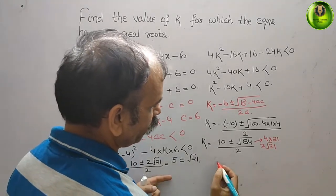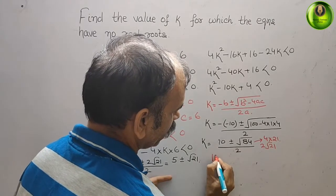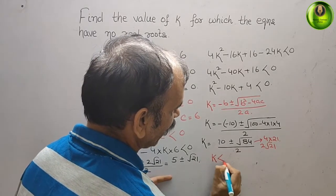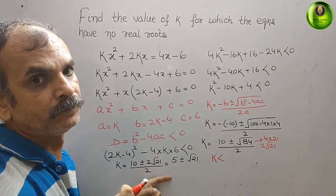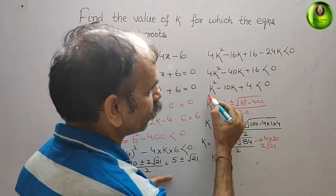So how we will find out the value of that? k should be less than, in which time will it be less? You can see this is positive.